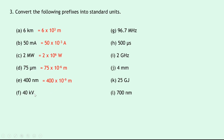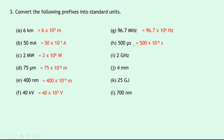Part f: 40 kilovolts becomes 40 times 10 to the 3 volts. Part g: 96.7 megahertz — replacing mega with times 10 to the power of 6 gives 96.7 times 10 to the 6 hertz. Part h: 500 microseconds — replacing micro with times 10 to the power of minus 6 gives 500 times 10 to the minus 6 seconds. Part i: 2 gigahertz — giga is times 10 to the power of 9, so we get 2 times 10 to the 9 hertz.